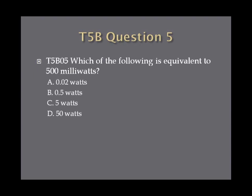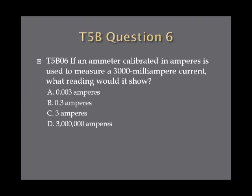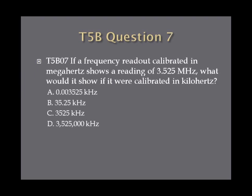Question 5: Which of the following is equivalent to 500 milliwatts? A) 0.02 watts, B) 0.5 watts, C) 5 watts, or D) 50 watts? Question 6: If an ammeter calibrated in amperes measures a 3,000 milliampere current, what reading would it show? A) 0.003 amperes, B) 0.3 amperes, C) 3 amperes, or D) 3 million amperes? Question 7: If a frequency readout calibrated in megahertz shows 3.525 megahertz, what would it show in kilohertz? A) 0.003525 kilohertz, B) 35.25 kilohertz, C) 3,525 kilohertz, or D) 3,525,000 kilohertz?